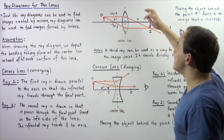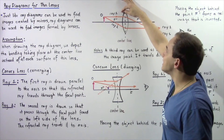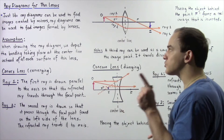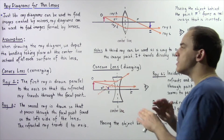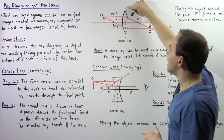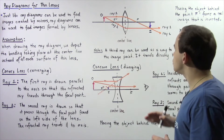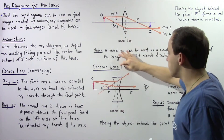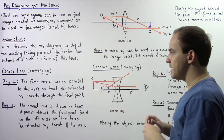In reality, any time light hits the lens, it bends at the first surface as well as at the second surface. But whenever we're drawing ray diagrams, we make the assumption that all the refraction — all the bending — is taking place at a line known as the center line. In these two diagrams, the center line is drawn as the brown dashed line, which essentially cuts our lens into two pieces.